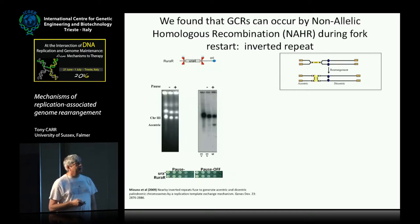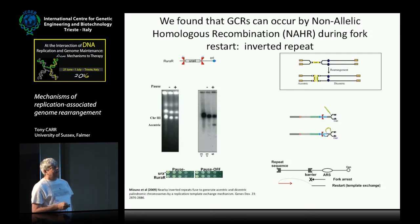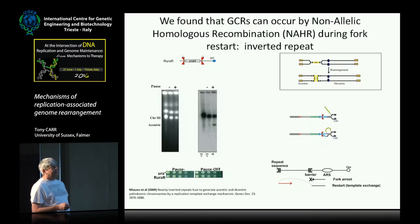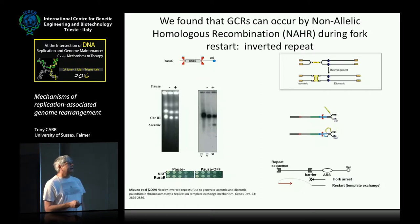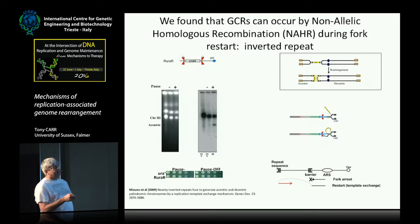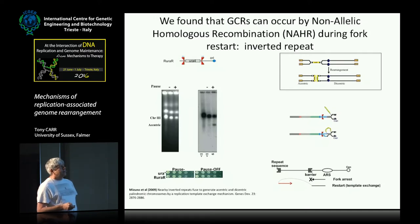This would be a nice precursor to a breakage-fusion-bridge cycle if we were working in a human cell. We worked out how this operated: the cell wants to invade into the correct DNA sequence, but there's a second sequence just nearby in an inverted orientation, and you get this ectopic or non-allelic homologous recombination — the cell can't distinguish between the two because it can only do homologous recombination based on sequence identity. So about one in 40 times it makes a mistake, invades the wrong sequence, and all kinds of gymnastics happen, ending with eccentric and dicentric chromosomes.